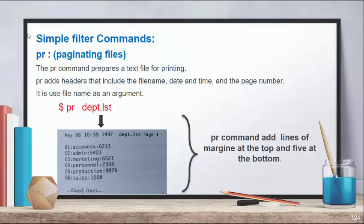The first command is PR. The PR command is used for paginating files — that means PR is used for preparing your file for printing. Before printing, you prepare the file by adding page numbers, headers, footers, date and time, and so on. PR adds both header and footer; in the header it includes the file name, date and time, and page number.